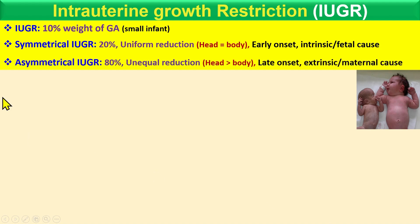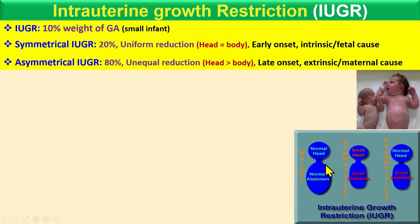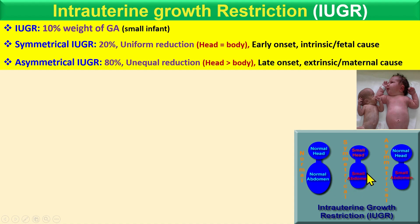There are two types of IUGR: symmetrical and asymmetrical. The most common is asymmetrical, accounting for about 80%, while symmetrical accounts for 20%. In symmetrical IUGR, both the head and the abdomen are smaller — there is a uniform reduction. You can compare this by looking at the abdominal circumference and head circumference.